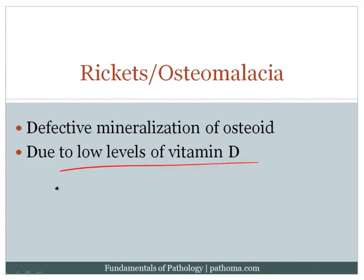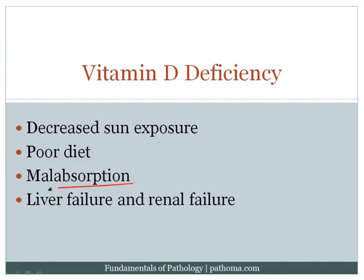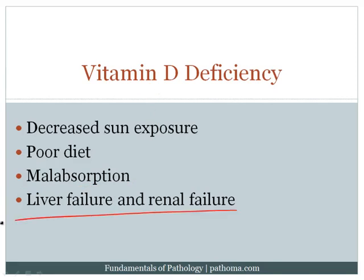This defect is due to low levels of vitamin D. Vitamin D acts on the intestine, kidney, and bone to resorb calcium and phosphate, maintaining their levels in the blood. Causes of vitamin D deficiency include decreased sun exposure — most blood vitamin D comes from the skin's exposure to the sun — poor diet, malabsorption (vitamin D is fat-soluble), liver failure, and renal failure, since both are essential for activating vitamin D.